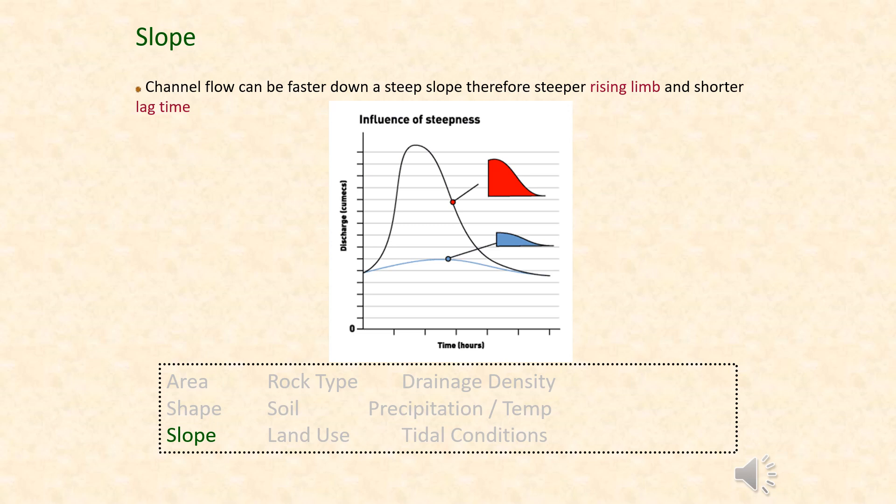The slope of a drainage basin has a very predictable impact on how quickly water reaches the river. A steep slope means water reaches the river faster, producing a steep rising limb and a shorter lag time. A gradual slope means water takes its time to reach the river, with less overland flow and more through flow, resulting in a more gradual rising limb on the storm hydrograph.